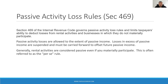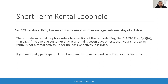Qualifying as a real estate professional with material participation in your rental activities is one way to use your rental real estate losses to offset your active income. It's an exception to the per se passive rule for rentals. We discussed real estate professional status in depth in a previous video, so you may want to go look that one up. In addition to qualifying as a real estate professional, another exception to the passive activity loss rules are rentals in which the average customer stay is less than seven days. This is commonly referred to as a short-term rental.